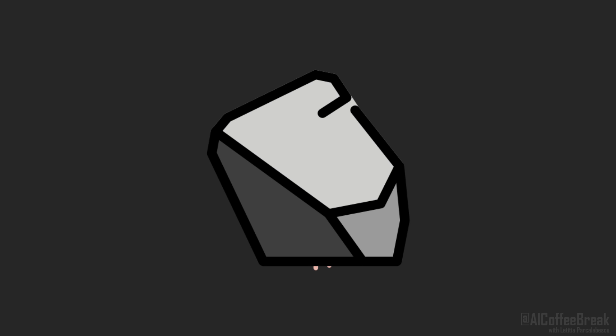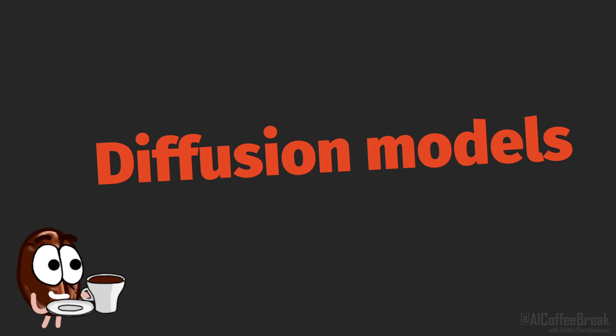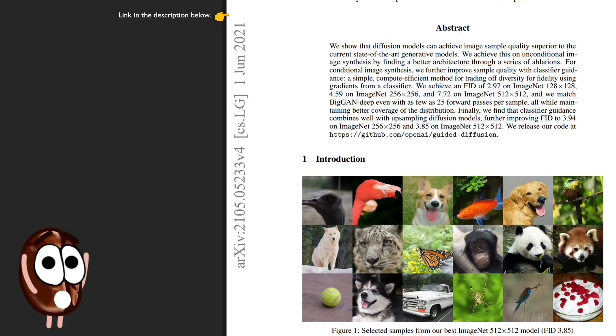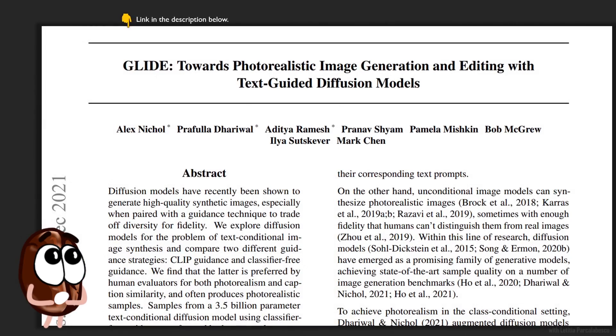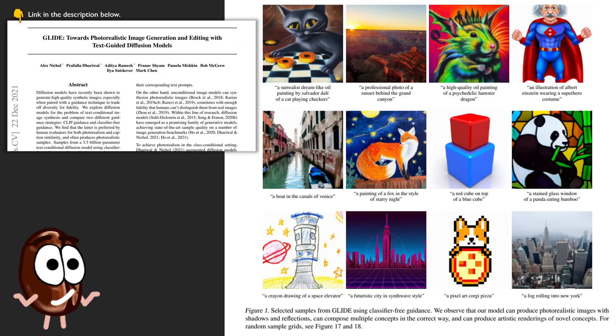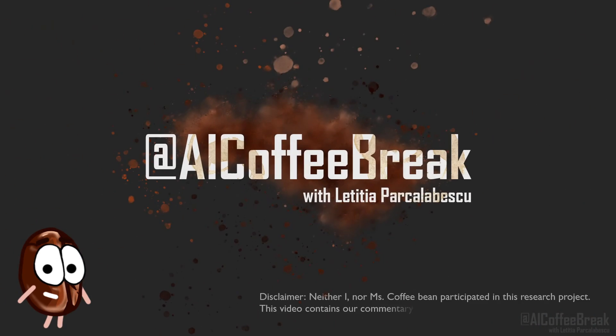Hello! If you weren't living under a rock these past months, then you surely have heard about diffusion models. OpenAI's diffusion models beat GANs at image synthesis. OpenAI's model Glide generates more photorealistic images than DALI with text-guided diffusion models. What are these diffusion models and why do they keep impressing us with their image generation capabilities? This is what we will explain in this AI Coffee Break.